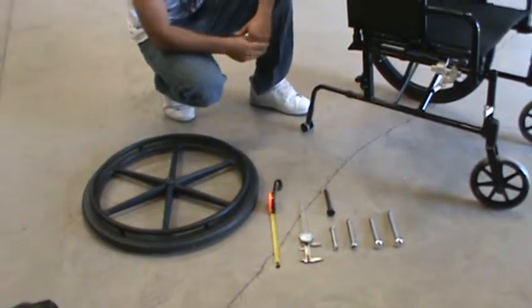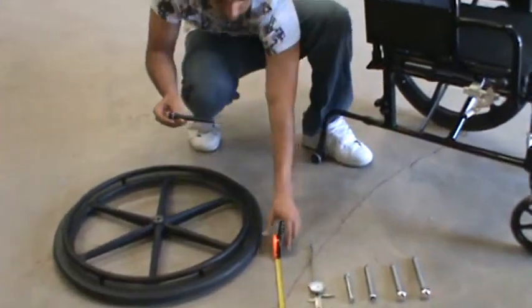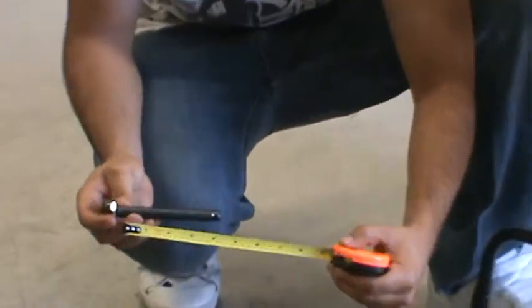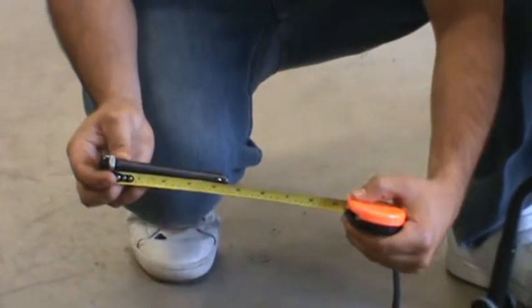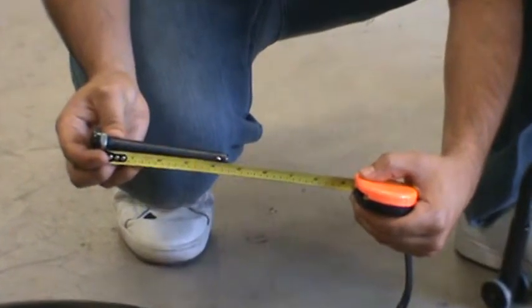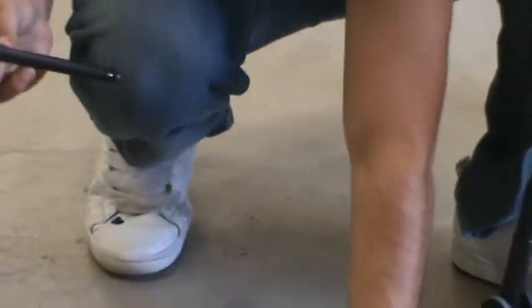Now to measure the axle, you can take a tape measure, measure from under the nut to the beginning of the ball. And this one is 4.2 inches. It should be correct for this wheelchair and rear wheel.